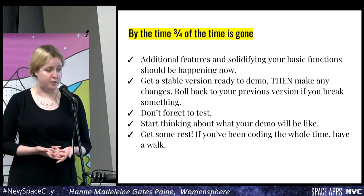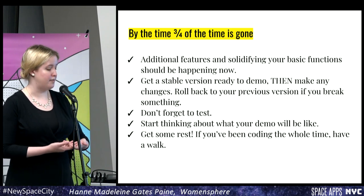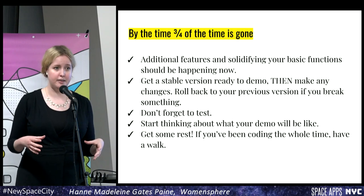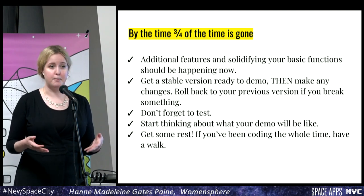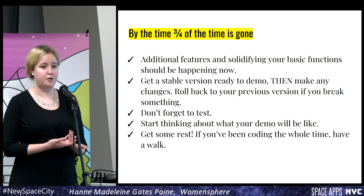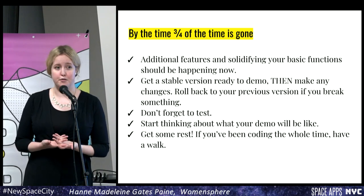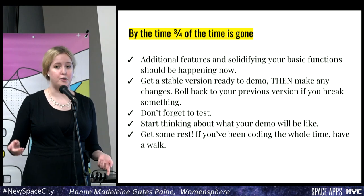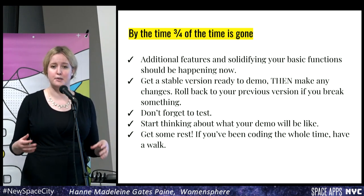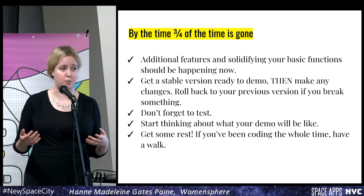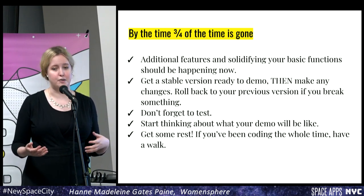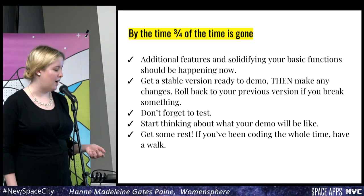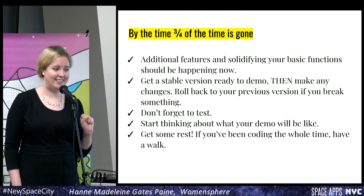By the time three quarters of the hackathon is over, you're now adding more features onto your basic functionality and you've got something that you feel pretty good about demoing. At this point, you should be figuring out what your stable version for demoing is going to be and nail it down on GitHub. Then you can roll back to it if you end up with problems later. This enables you to be more adventurous in the last quarter. Don't forget to do testing — testing is important.